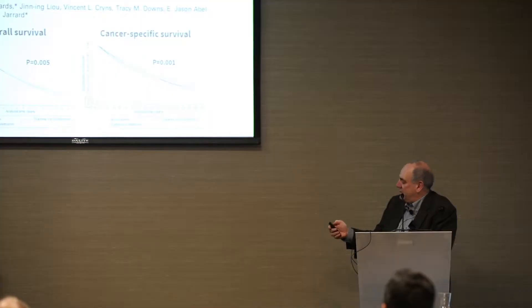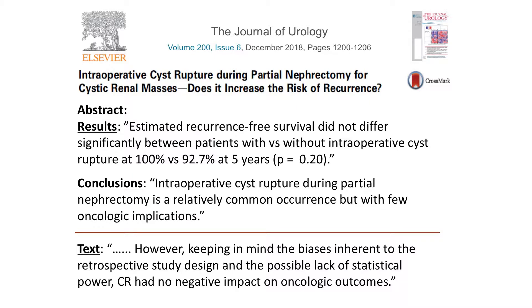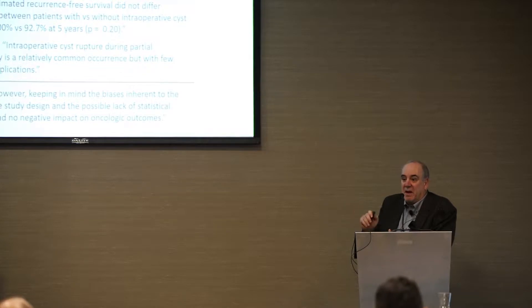The next example shows a difference in cancer recurrence of 100% versus 92.7% at five years, with p = 0.2. That's a big absolute difference, but it's not significant. So they say the procedure had no negative impact on oncologic outcomes. They see a non-significant 7% recurrence risk — here you have 100% non-recurrence, here you have 7% recurrence. That would mean something to me. But it's not significant, so they say they found nothing. In one case they found nothing but say they found something; here they found something but say they found nothing.